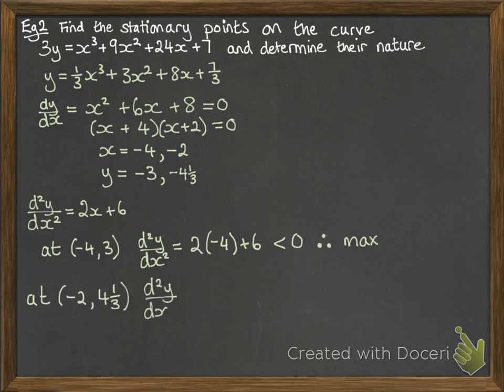At the other coordinates, we put in x being -2. And you can work that one out to be greater than 0. Therefore, that coordinate provides us with a minimum point.